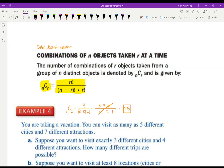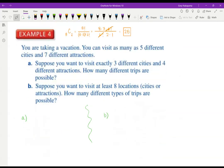Number four, you're taking a vacation. You can visit as many as five different cities and seven different attractions. Suppose you want to visit exactly three different cities and four different attractions. How many different trips are possible? So this is the kind of problem that combines combinations with the fundamental counting principle. How many different ways can I visit three cities? Well, there's five cities and I only want three of them. Does the order that I visit the cities matter? If I go to Venice, Paris, and London, is that the same thing as going to London, Paris, and Venice? It is. So the order doesn't matter. So this is 5C3. And then I have seven different attractions and I'm going to choose four of those. That's 7C4. So five choose three is 10. Seven choose four is 35. So I got 350 different trips are possible.